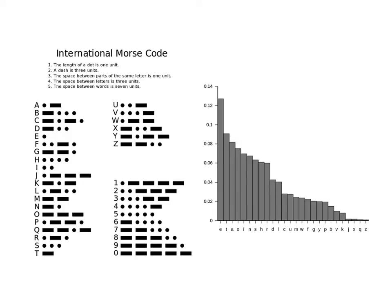The least frequent letters, Q and Z, are encoded using much longer sequences: dash dash dot dash, and dash dash dot dot, respectively.